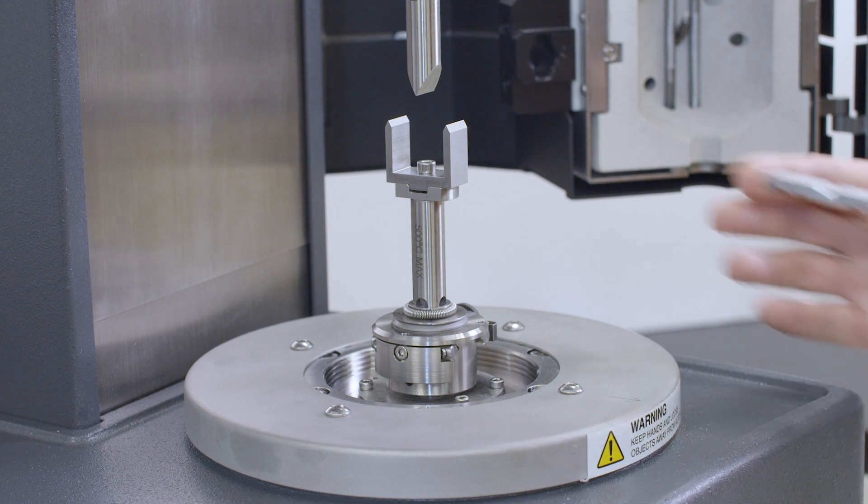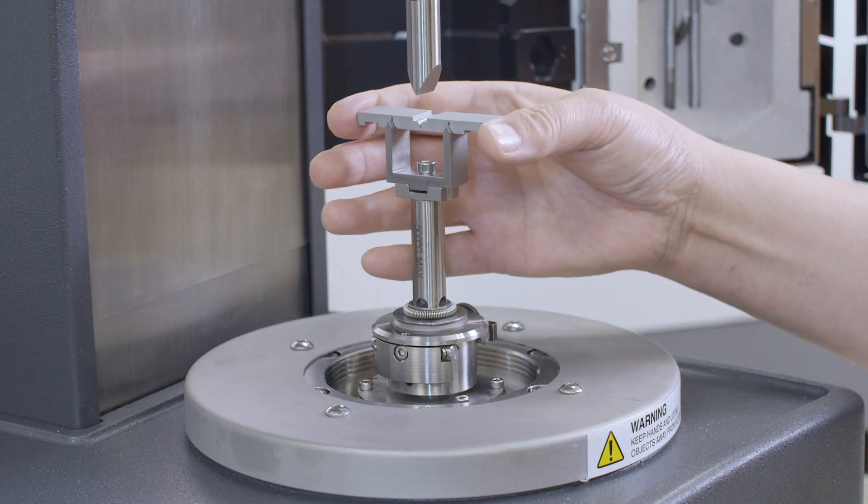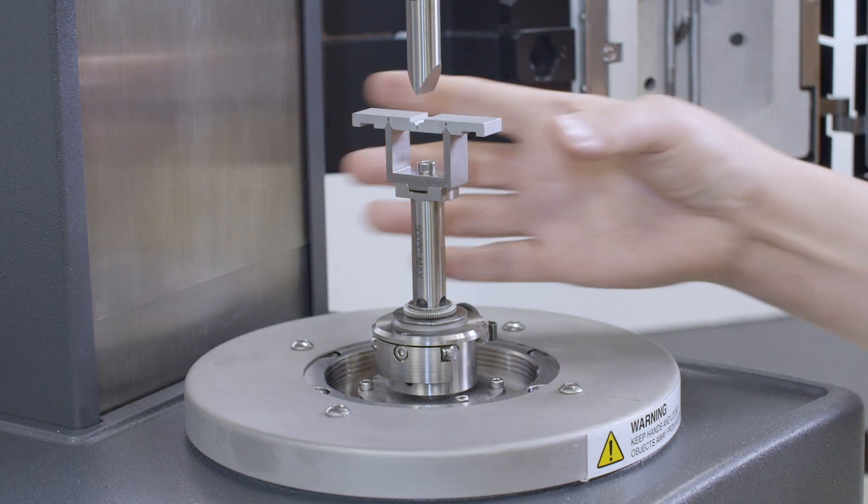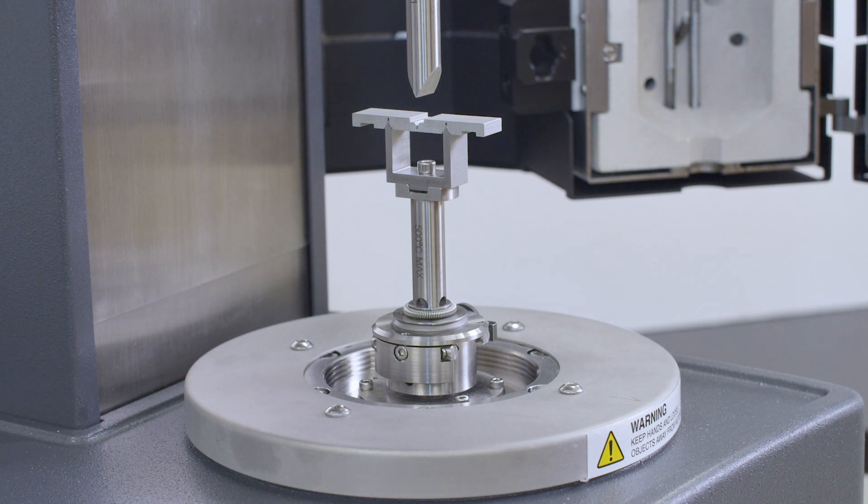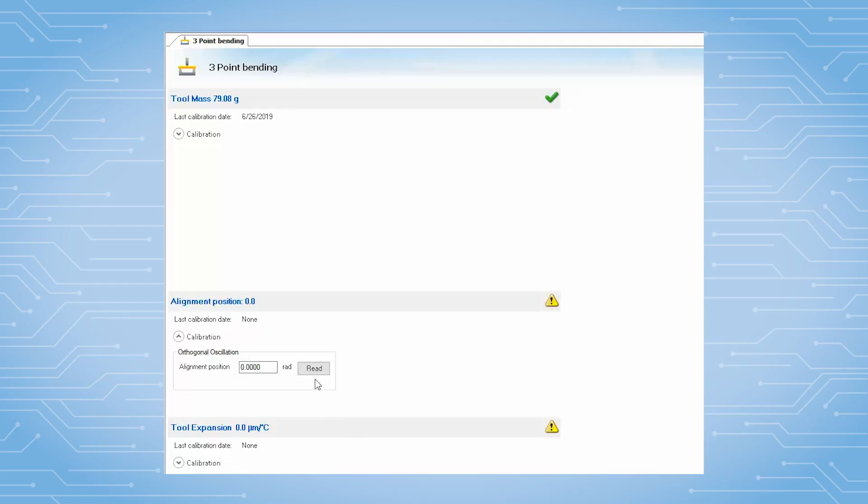Place the alignment tool onto the bottom clamp frame. Carefully lower the upper geometry until the upper tool is inserted into the center v-slot of the alignment tool. Use the TRIO software to read the alignment position through the geometry calibration.